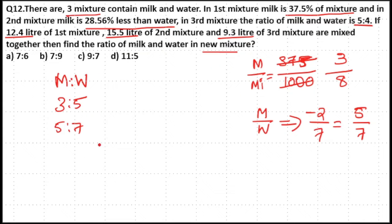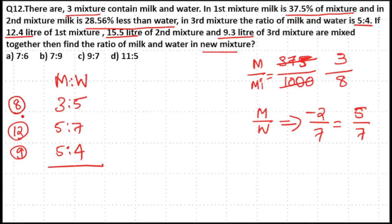The third ratio is 5 to 4. Now 5 plus 4 equals 9 parts total. For the second mixture, 7 plus 5 equals 12 parts. For the first mixture, 3 plus 5 equals 8 parts. The LCM of 8, 9, and 12 is equal to 72.